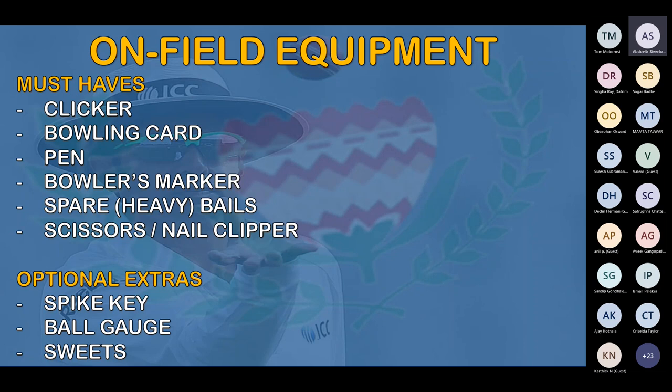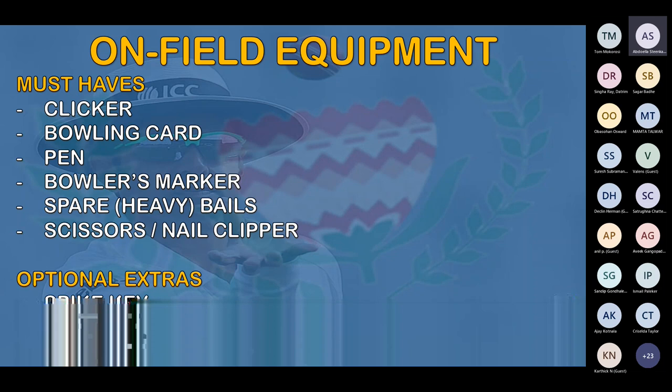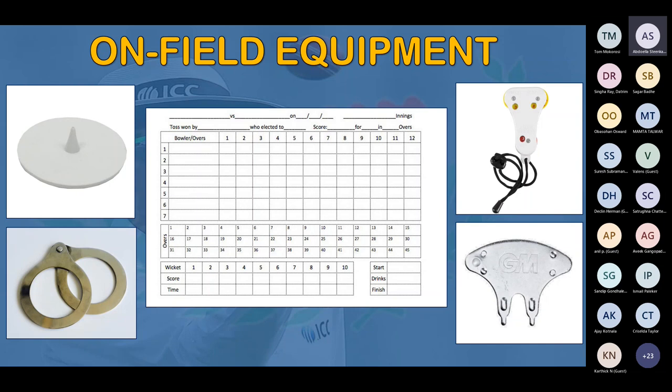Pictures of equipment: top left is a bowling marker, which bowlers use to mark their run-up; bottom left is a ball gauge; top right is a clicker; bottom right is the spike key; and in the middle is an example of a bowling card where you record bowlers' names, overs bowled, overs completed, wickets and start of ring times.